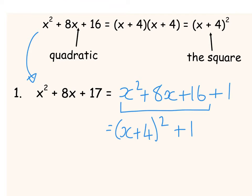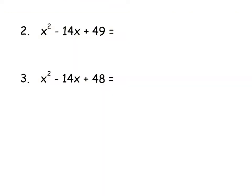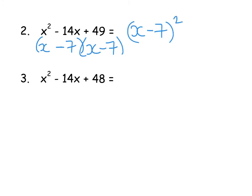Bear in mind I'm not actually showing you the full method yet. This isn't going to be possible for every single quadratic because not every one will be just one away from a perfect square. For example, X² - 14X + 49 factorises as (X - 7)², since -7 and -7 make -14 and multiply to 49. The next example X² - 14X + 48 is one less than 49, so it becomes (X - 7)² - 1.